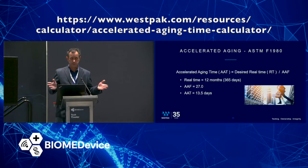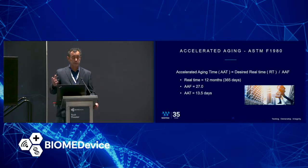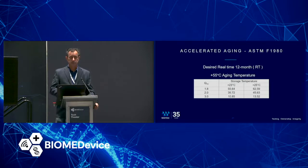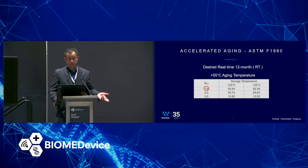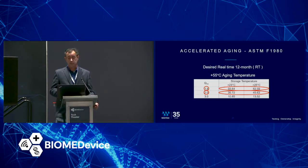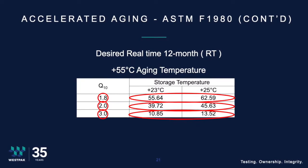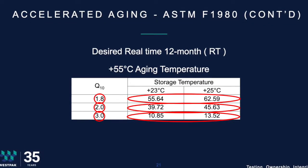We can do this for a whole host of different time periods — typically six-month, one-year, and three-year, and up to five years for the lifetime of a medical device. Putting this all together in a table: keeping desired real time at 12 months and aging temperature at +55°C, at Q10=1.8 you get a longer duration; at Q10=2, the most common, you get 39.72 and 45.63 days — so 40 and 46 days. At Q10=3, we can get it down to 11 and 14 days. Studying our materials and changing the Q10 can be used to our advantage.